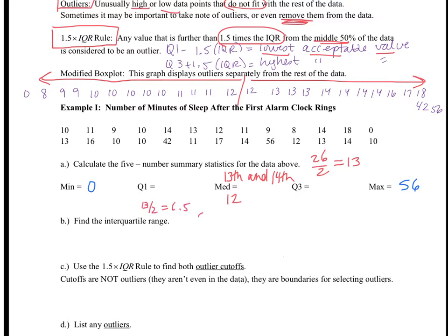which means I'm going to use the 7th data point, which is 10. So, 10 is my Q1, and if I do the same thing for my Q3, I get my Q3 to be 14.